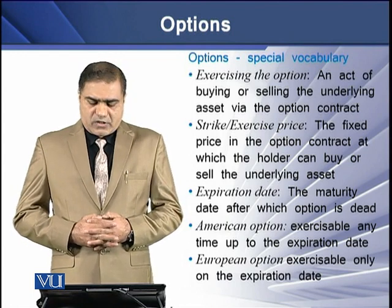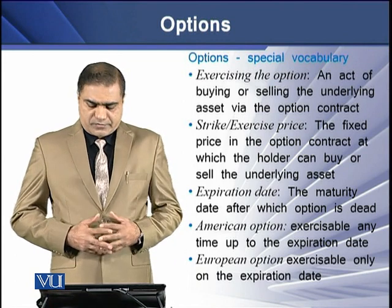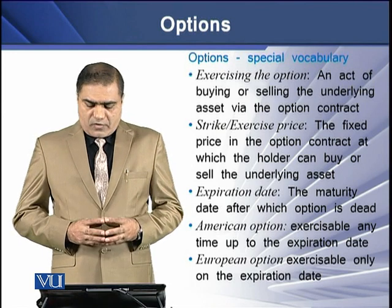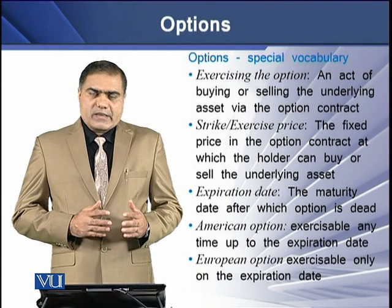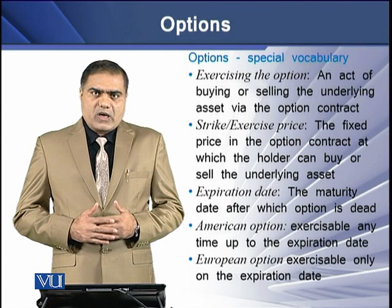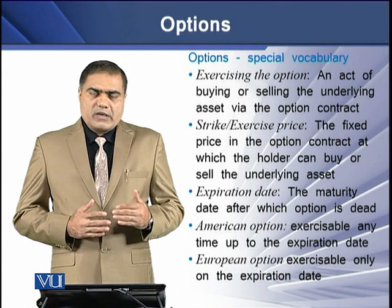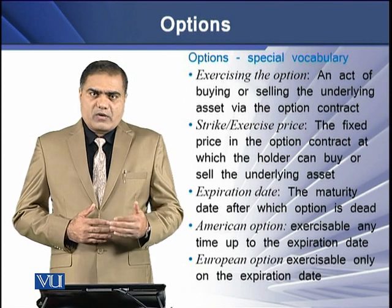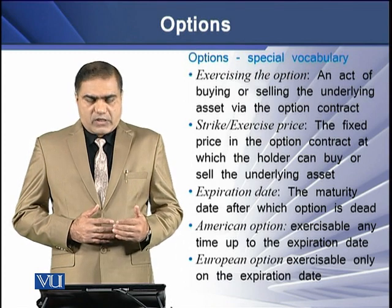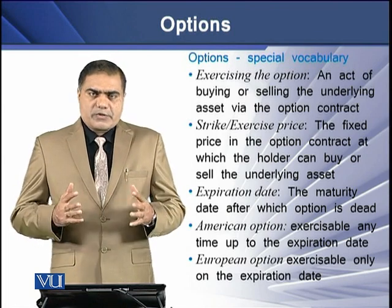'Expiration date' is the maturity date after which the option comes to an end. An 'American option' is exercisable anytime before the maturity date of the option contract. A 'European option' is different from the American option in that it can be exercised only on the expiration of the maturity date of the option contract.